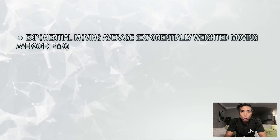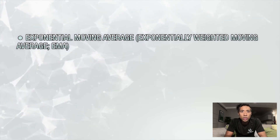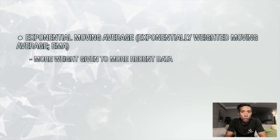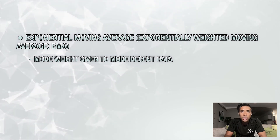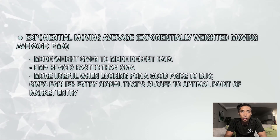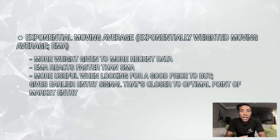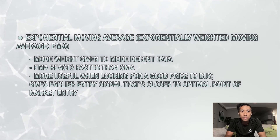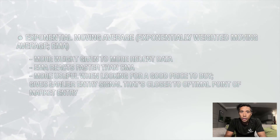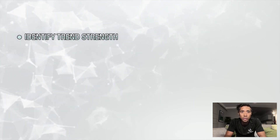The exponential moving average is more formally known as an exponentially weighted moving average, due to the fact that more weight is given to the more recent data during its calculations. Because of this, the EMA tends to react faster than the SMA and thus can be more useful when looking for a good price to buy. Its faster reaction and tendency to hug price gives you an earlier entry signal that's closer to the optimal point of market entry. Traders making moves over long time periods can use longer timeframe EMAs and the direction in which they're pointing to identify the strength of a trend.